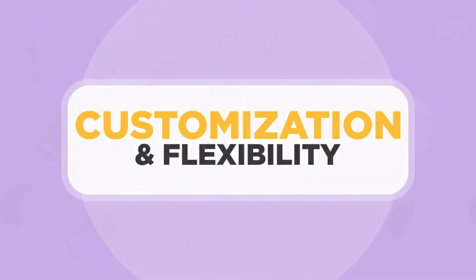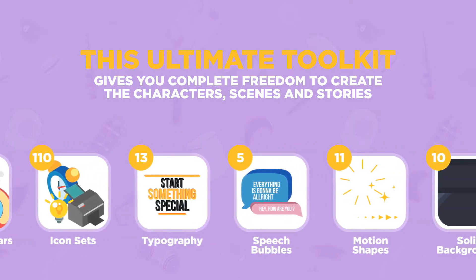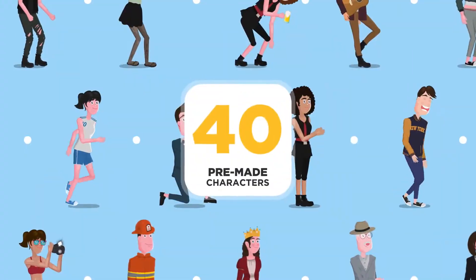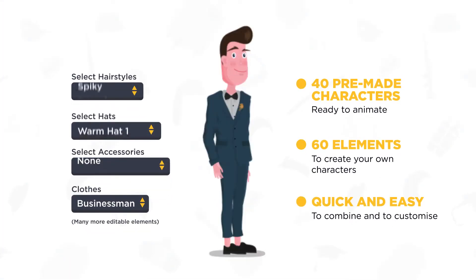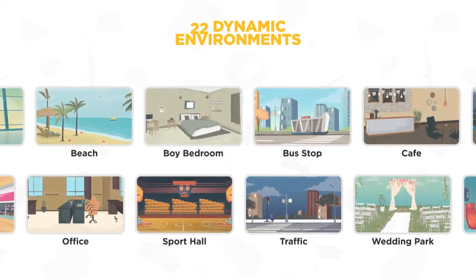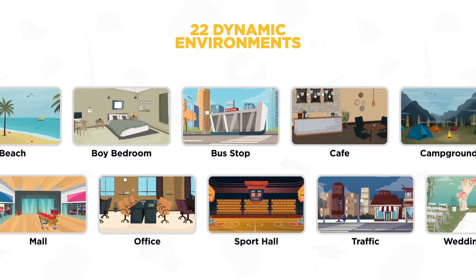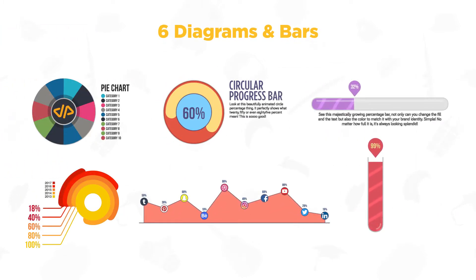Customization and flexibility: this ultimate toolkit gives you complete freedom to create the characters, scenes, and stories that your audience needs to see. There are 40 pre-made characters with over 10 billion combinable outfits and poses. You can customize everything from skin texture and facial expressions to hairstyles and accessories, and then place your characters within our 22 dynamic environments. You can adjust the color palette and ambience, and even add speech bubbles and animated icons. There are also six customizable diagrams and bars to choose from, which are perfect for visual explainers and video marketing.